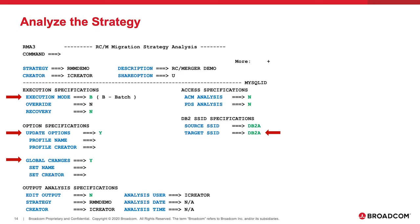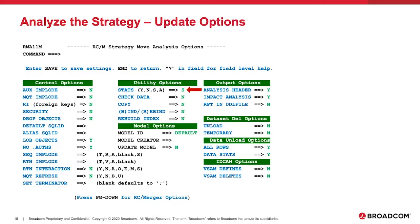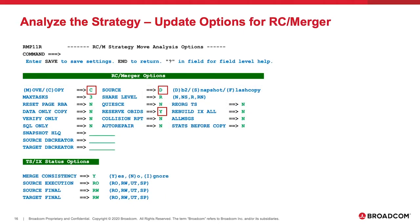These are the analysis options you would normally see if you are using RCMigrator or RC Compare. Because one of our requirements is that we want the catalogue statistics for these objects to be copied from the source to the target, we choose option S for the stats field under the utility options, and this generates the SQL to propagate the statistics to the target objects. For RC Merger the important options are on the second page, so we PF8 to page down. Here we have several critical options for the RC Merger strategy. First, we have to choose if we are going to move or copy the objects and data — we want to create a new copy, so we choose C for copy. The source of our data is the underlying VSAM datasets from our existing objects, so we choose D for DB2. The last option highlighted in the red box is reserve OB IDs.